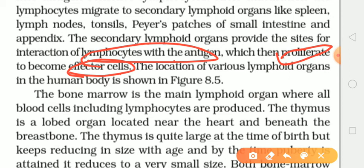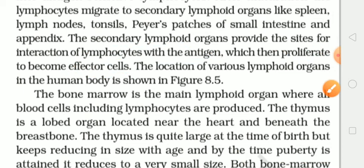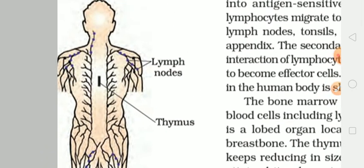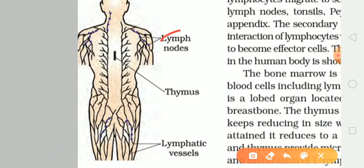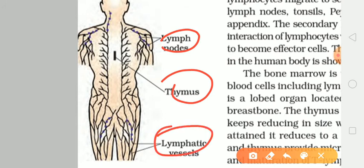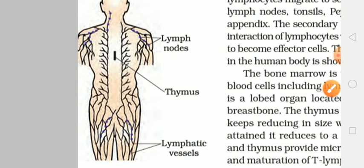The location of various lymphoid organs in the human body is shown in figure 8.5. Toh jo diagram hai 8.5, uske andar alag-alag type ke jo lymphoid organs hain unki location batai hui hai — for example jo lymph node hai, jo thymus hai, voh body mein kahan-kahan situated hai, voh location yahan batai hui hai.